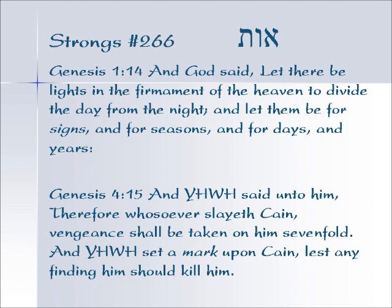Genesis 4:15 — And Yahweh said unto him, therefore whosoever slayeth Cain, vengeance shall be taken upon him sevenfold. And Yahweh set a mark upon Cain, lest any finding him should kill him. This was some external, perhaps some disfigurement that happened to Cain. Nobody can really say what that mark was, but it was visibly recognizable — an externalization of something that had already happened inside him as a result of committing the heinous crime of having killed his brother.